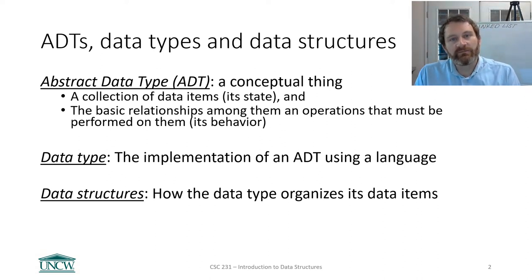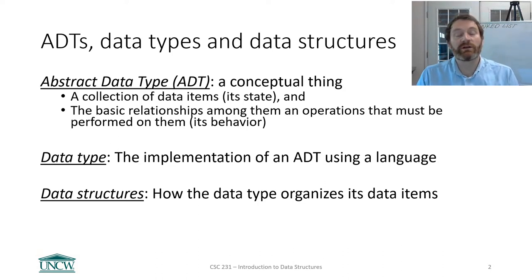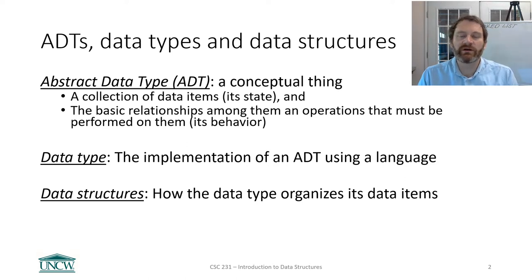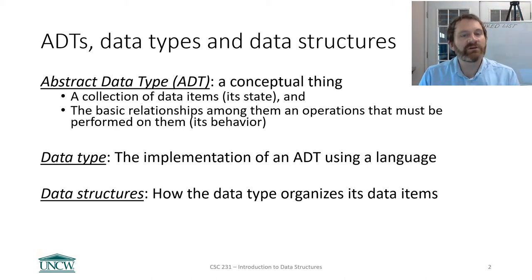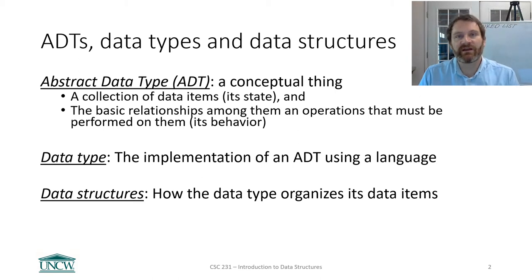Just a quick reminder of some really key terms. An abstract data type, or ADT, is a conceptual thing comprised of two things: the data that it stores, and the operations that you can perform on this data. The example we gave of an abstract data type before was an unordered list — you can create them, append to them, access things by index. That's an abstract data type.